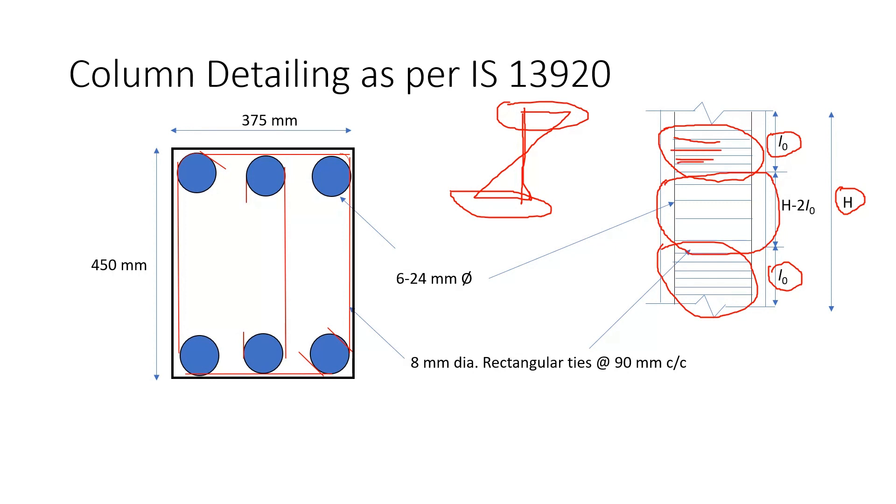Now what will be the length of this L0? As per the code the length of this L0 is maximum of larger lateral dimension, 1 6th of clear span and 450 mm. So in our case it will be 450 mm.